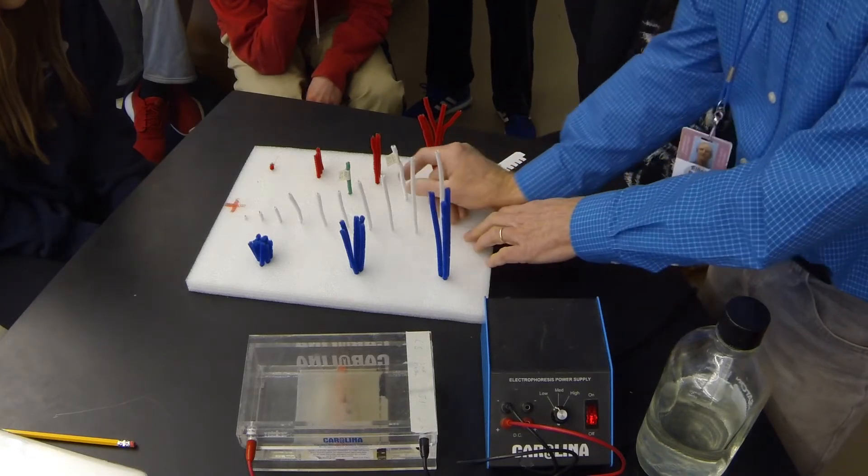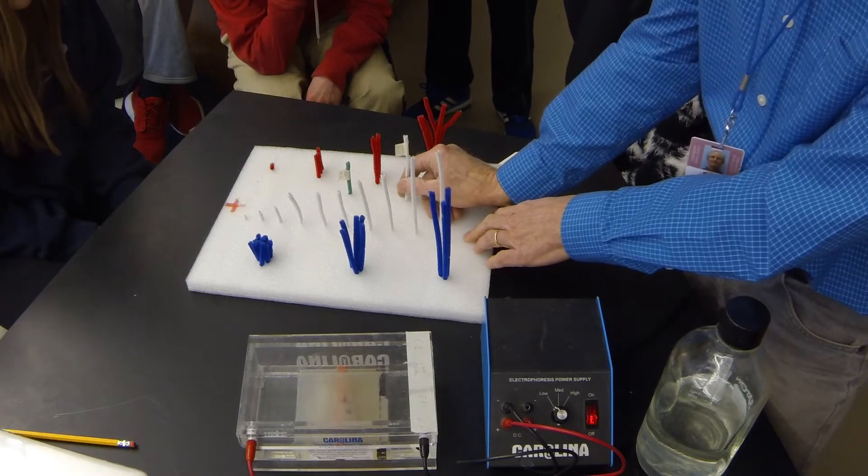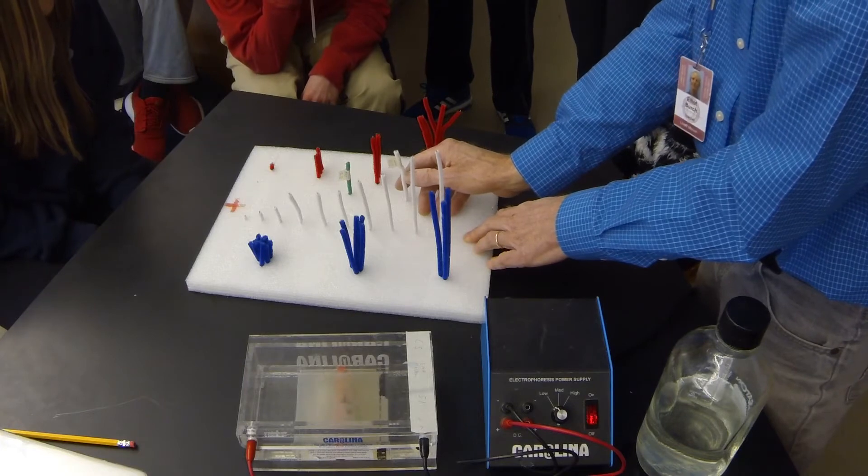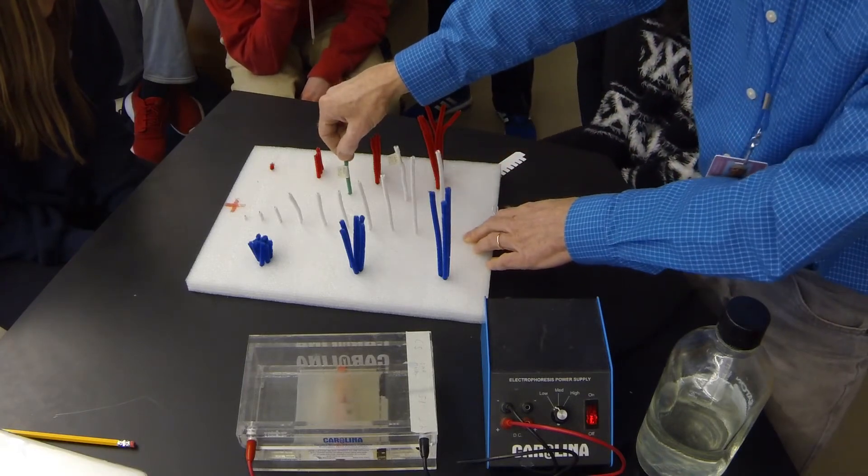For example, this pipe cleaner here is a DNA size standard. It says 1200 base pairs, that's DNA letters, in length. This one said 800 base pairs in length.